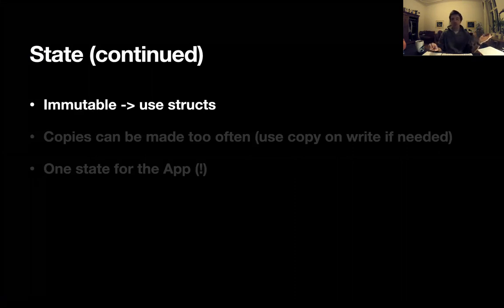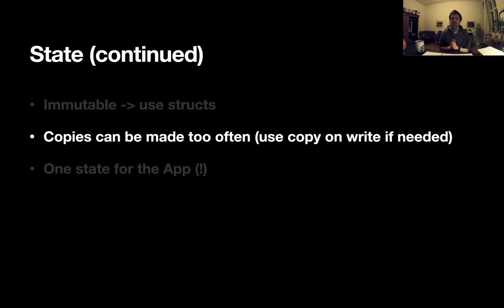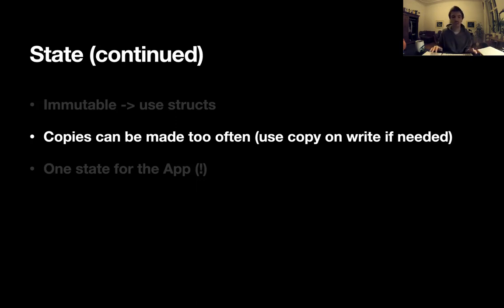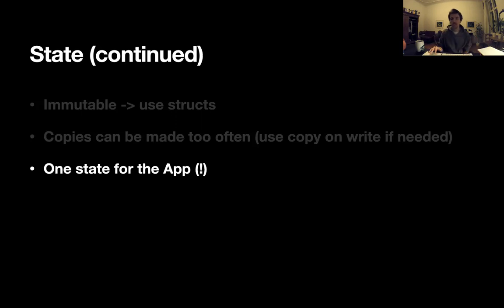When a view receives the state, it cannot affect the state inside the store — it only gets a copy. The state can be changed only inside the store, so it's fully immutable. But you need to know that copies of the state can be made very often. For example, if some views update really fast — say ten times a second — you would make copies of the state a lot and copy all the data, which is not ideal. In some complex cases, you need to use copy-on-write so you won't copy stuff unless it changes. And again, we have one state for the app.